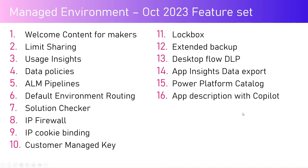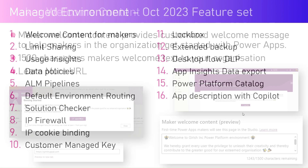The different features available in the managed environment as of October 30th 2023 total 16. I'm not going to go into much depth here, as I'll cover each of the 16 features in separate detailed videos. But this video gives a glimpse of all of them: welcome content for makers, limit sharing, usage insights, data policies, ALM pipelines, default environment routing, solution checker, IP firewall, IP cookie binding, customer managed key, lockbox, extended backup, desktop flow DLP, app insights, data export, Power Platform catalog, and app description with Copilot.